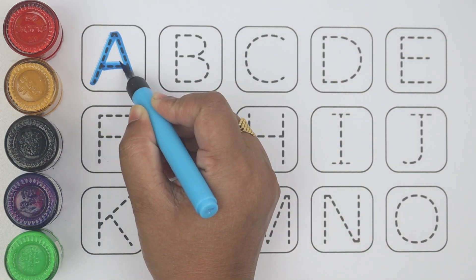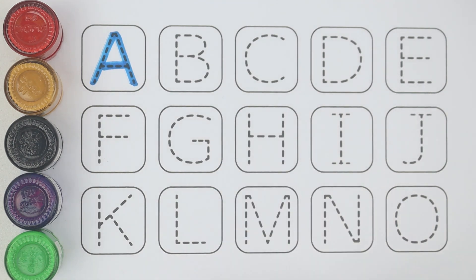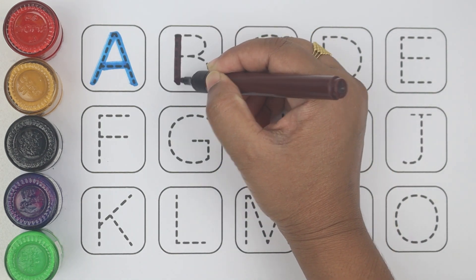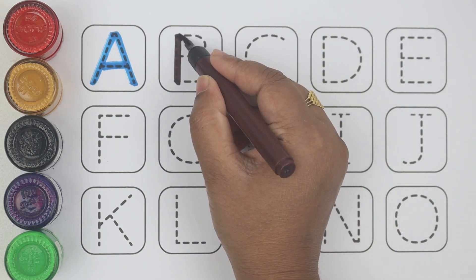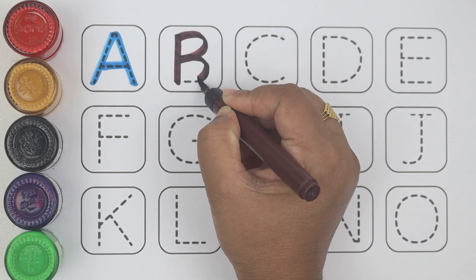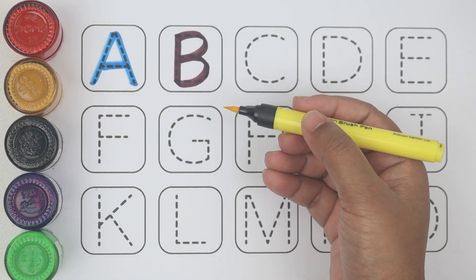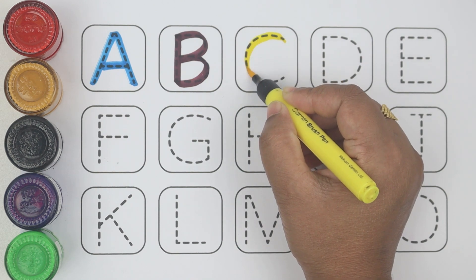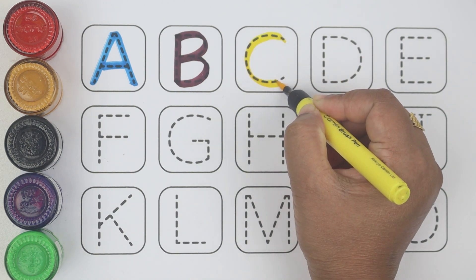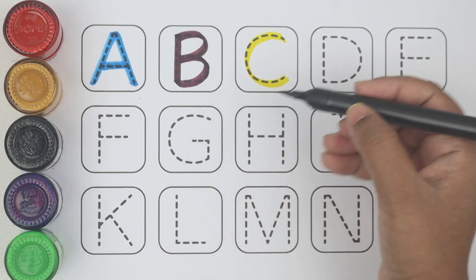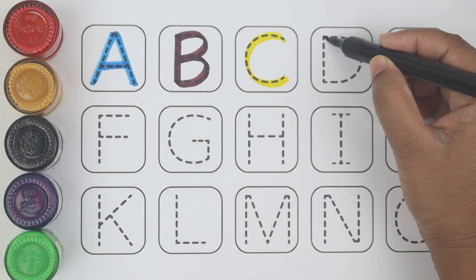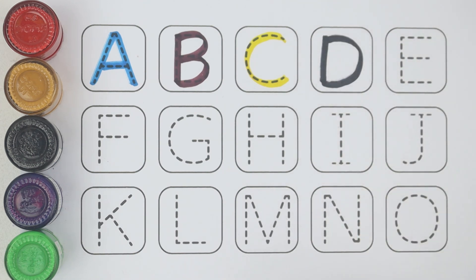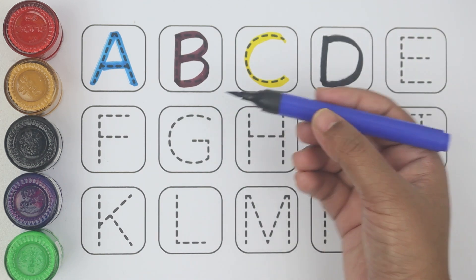A, A for apple, brown color. B, B for ball, yellow color. C, C for cat, black color. D, D for doll, blue color.